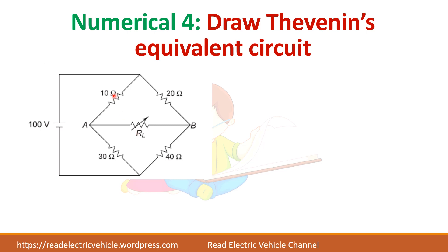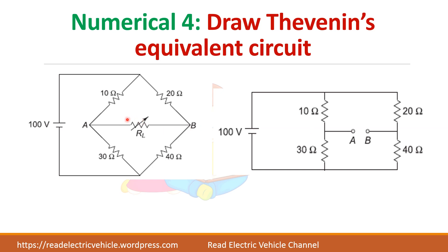First you have to find the open circuit voltage. Remove the load — the same circuit has been drawn with load removed. You see here 10 ohms and 20 ohms are connected in parallel, and between them you have points A and B. 30 and 40 ohms are there. Now we have to find the voltage across points A and B.